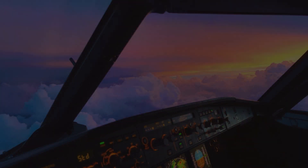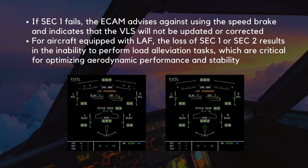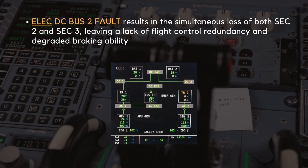Specific consequences arise depending on which SEC is affected. If SEC 1 fails, the ECAM advises against using the speed brake and indicates that the VLS (minimum selectable airspeed) will not be updated or corrected. For aircraft equipped with load alleviation function, the loss of SEC 1 or SEC 2 results in the inability to perform load alleviation tasks, which are critical for optimizing aerodynamic performance and stability during flight. Moreover, a DC bus 2 fault results in the simultaneous loss of both SEC 2 and SEC 3, leaving a lack of flight control redundancy and degraded braking ability.